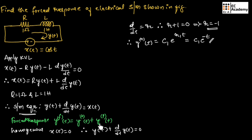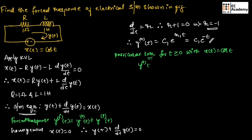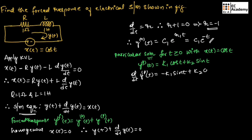Now we need to find the particular solution. The particular solution for t greater than or equal to 0 with x(t) equal to cos(t) can be given as yp(t) is equal to k1·cos(t) plus k2·sin(t). If we differentiate the above equation, we will get d/dt·yp(t) equal to minus k1·sin(t) plus k2·cos(t).